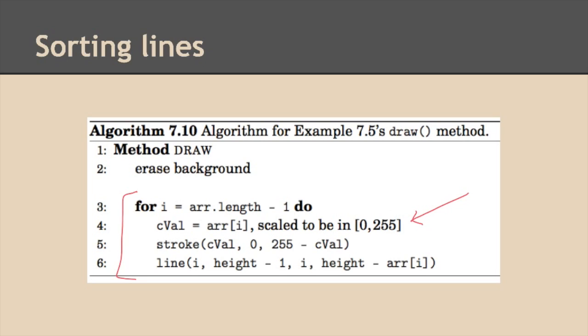So remember, we're going to take this array value and somehow we're going to scale it to be a color value between 0 and 255. And then we'll take that color value, use it as the red component, and use its inverse as the blue component of a new color that we'll set the line color to. And then finally, we'll draw our line for that particular value of i.